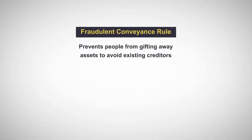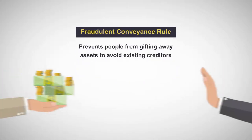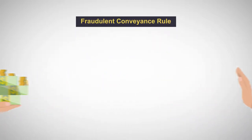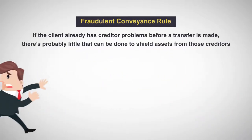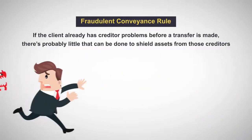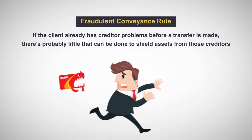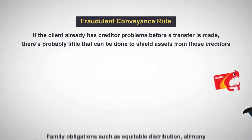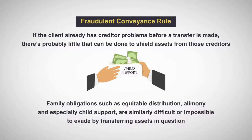The fraudulent conveyance rule prevents people from gifting away assets to avoid existing creditors. The general rule of thumb is that if the client already has creditor problems before a transfer is made, there's probably little that can be done to shield assets from those creditors. Family obligations such as equitable distribution, alimony, and especially child support are similarly difficult or impossible to evade by transferring assets in question.